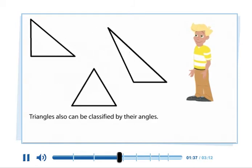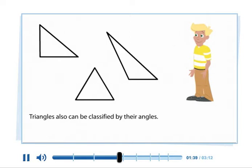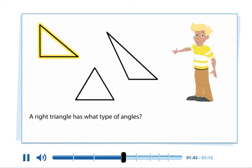Triangles can also be classified by their angles. A right triangle has what type of angles? A right triangle has one right angle.